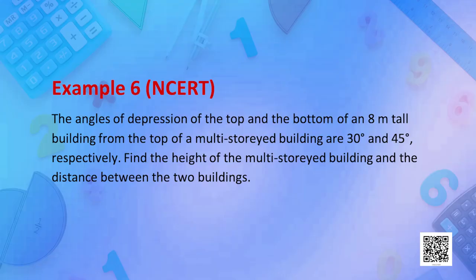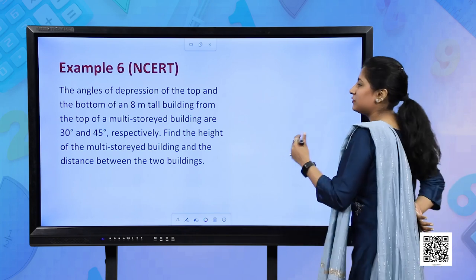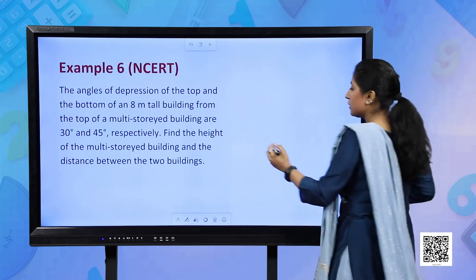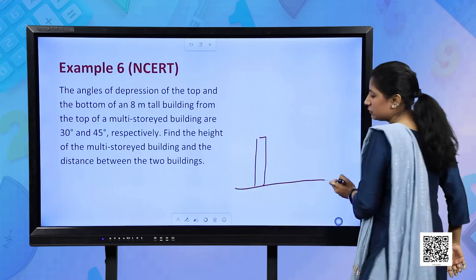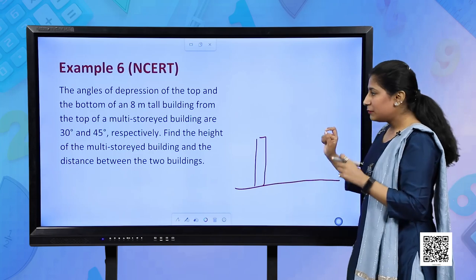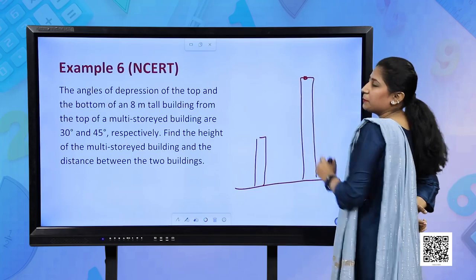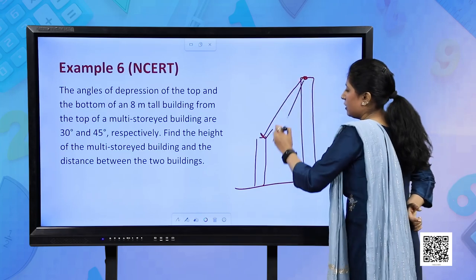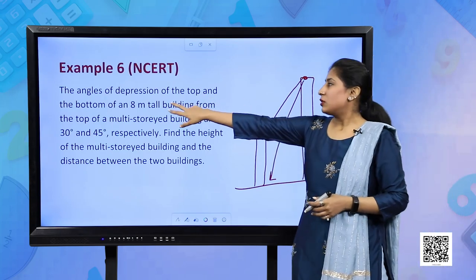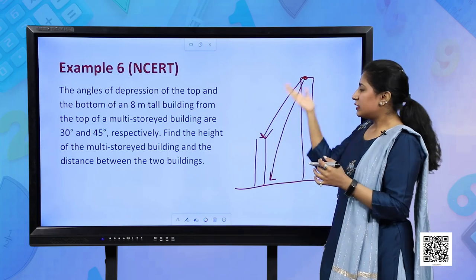Now let us look at Example 6 from your NCERT book - angles of depression. It doesn't talk about angle of elevation but angle of depression, meaning we go below the horizontal level. Angles of depression of the top and bottom of an 8 meter tall building - I am making this 8 meter tall building on the ground. From the top of a multi-storied building, angles of depression are being made to the top and bottom of the 8 meter tall building. Obviously the multi-storied building has to be taller than the 8 meter tall building.